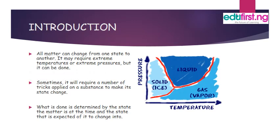Now we are going to look at the different states in which matter can exist — that is the solid, the liquid, or the gaseous state. All matter can actually change from one state to another. It may require extreme temperatures or extreme pressures, but it can be done. Sometimes it will require a number of tricks applied on a substance to make its state change, and what is done is determined by the state the matter is in at the time and the state it is expected to change into.